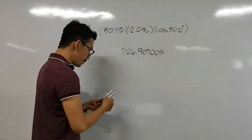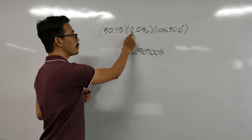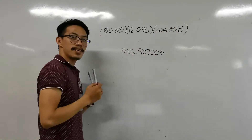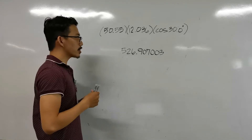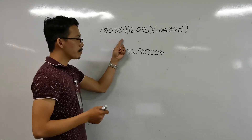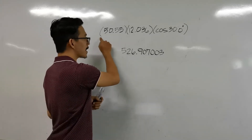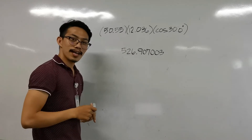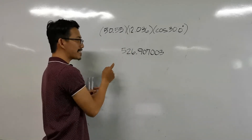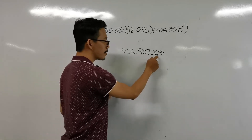For example, we have 50.55 times 12.06 times cosine 30.0 degrees. Take note of the operations used in the problem — here we are dealing with multiplication. Since we are only dealing with multiplication, we can just input it in our calculator, and our calculator will give us an answer of 526.907003.